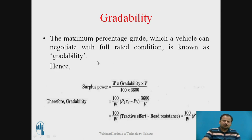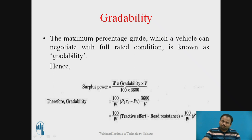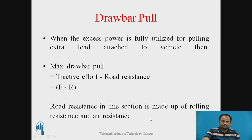Gradability: the maximum percentage grade which a vehicle can negotiate at full rated condition is known as gradability. The formula is: surplus power equals force times velocity divided by 3600, times η_T. Instead of acceleration, we take gradability here. Since gradability is in percentage, the denominator is multiplied by 100. From this formula we can calculate the gradability of a vehicle.